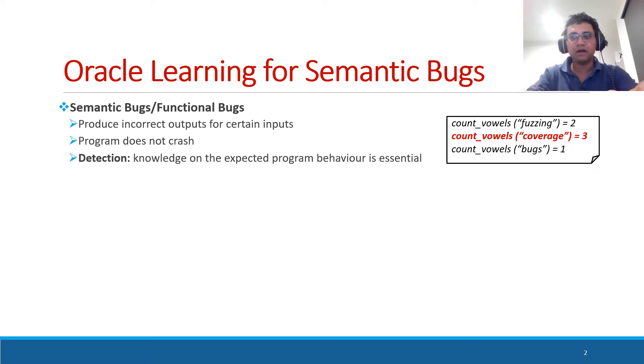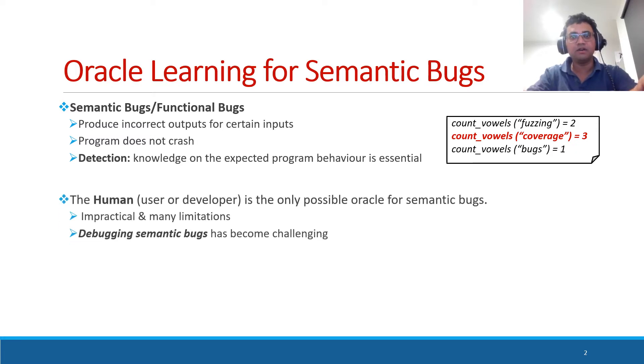Usually when a semantic bug is exposed, the program does not crash. However, it produces wrong outputs like this. In order to detect these bugs, therefore, you need to know the expected or correct program behavior. As an example, in order to say the vowel count for coverage is wrong, you have to know the accurate vowel count of this string. Due to this reason, human is the only possible oracle for semantic bugs, but we know that there are some limitations and it is not practical. Debugging of semantic bugs has become a challenging task.